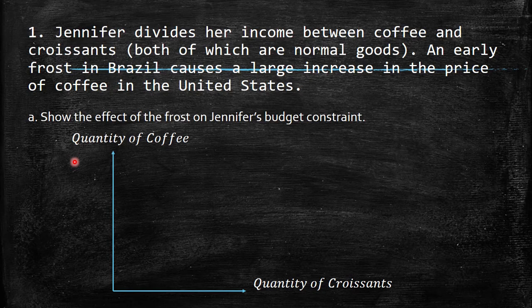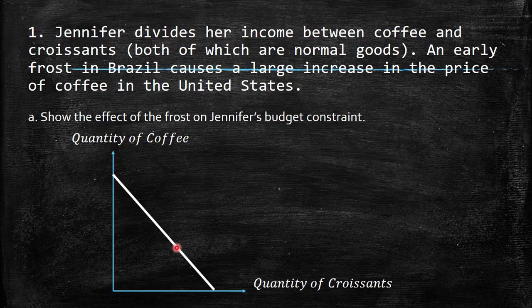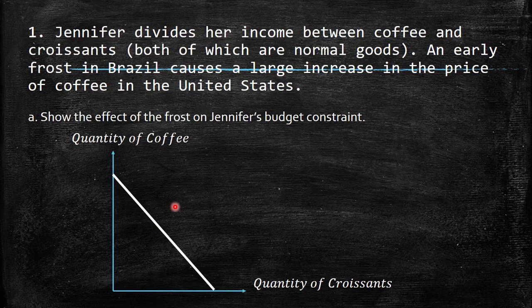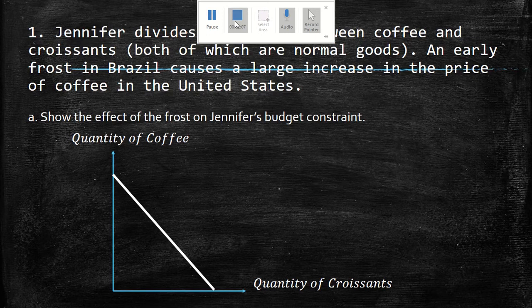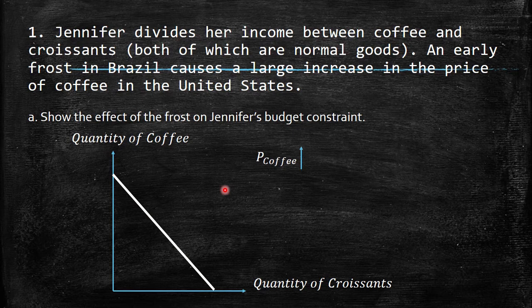Here is the budget constraint. Remember, this provides the bundles — the infinite quantity of bundles that represent the maximum of your income, spending all income available. If you are below, you spend less than available; if you go above, you spend more, so that's not possible. Imagine the situation where the price of coffee goes up because there is a frost — a negative impact on supply that at the end of the day provides an increase in the price of coffee.